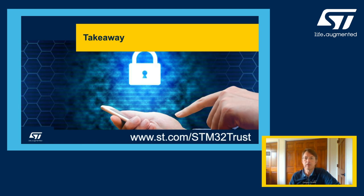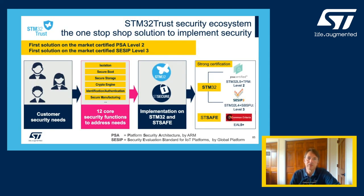So what are some of the key points to remember? The STM32 Trust Security Ecosystem is a unique and certified security framework, helping to implement security in new product designs. Starting from common security needs, we've defined a set of 12 core security functions implemented across our STM32 and STSAFE product portfolios. For seamless implementation of secure boot and secure firmware update, or for secure manufacturing with strong certification according to new security standards, our STM32 Trust Ecosystem is the first on the market certified PSA Level 2 and CSIP Level 3, and can participate in larger systems such as PCI, FIPS, and IEC 62443. Our customers can really trust what ST can deliver.